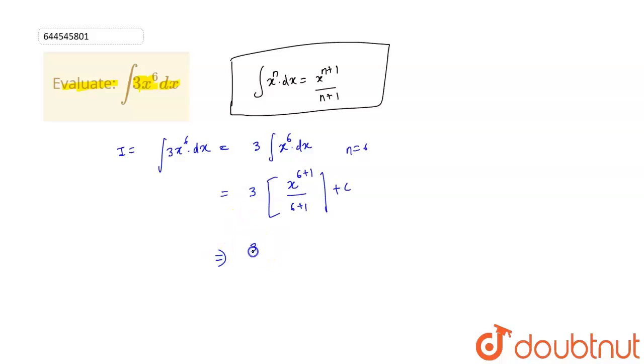Now it becomes 3, and 6 plus 1 is 7, so it becomes x to the power 7 plus c. So our answer for i is equal to 3 by 7 x to the power 7 plus c.